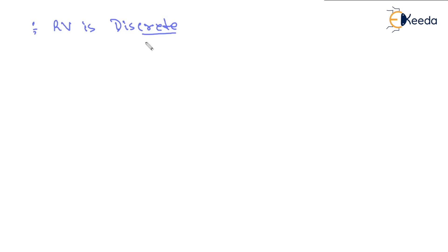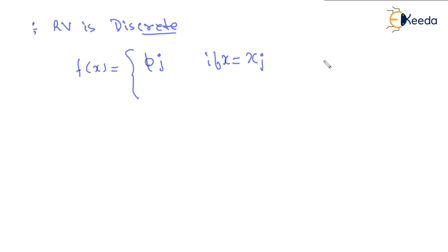The random variable can be discrete or continuous. If the random variable is discrete, the probability function or probability density function F of X or P of X is given as P sub J if X is equal to X sub J, where J equals one, two, and so on. And it is zero otherwise.